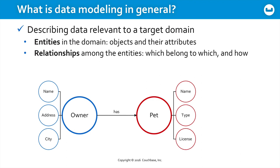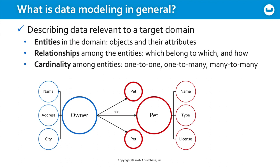Last, cardinality — how many are on each side? Does each owner have one pet? Does it have many pets? Perhaps there are many owners and many pets, and each owner may own multiple pets. It's good to figure this out in advance.